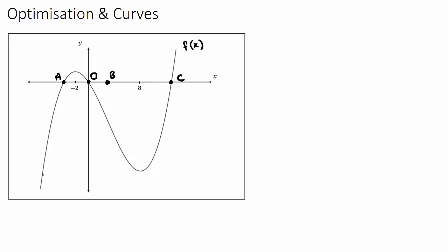I have a function here — I have my curve, this is going to be an f(x) curve, and I've just put some dots referring to some coordinates on our curve. We have point A here, where x would be negative 2; here x would be 0 at the origin O. I've put some point here at B, and we also have x = 8 and then we have C.